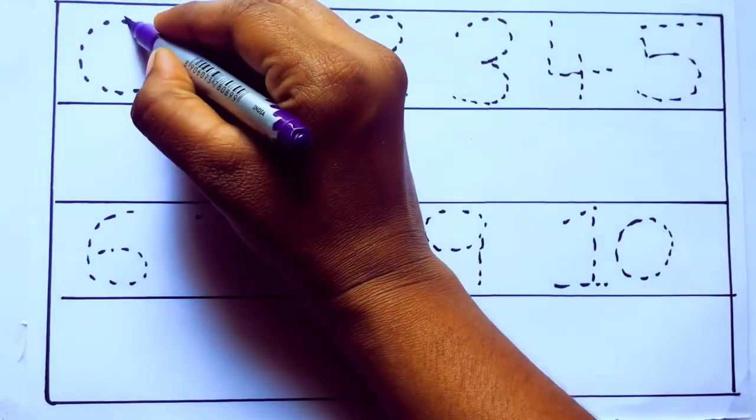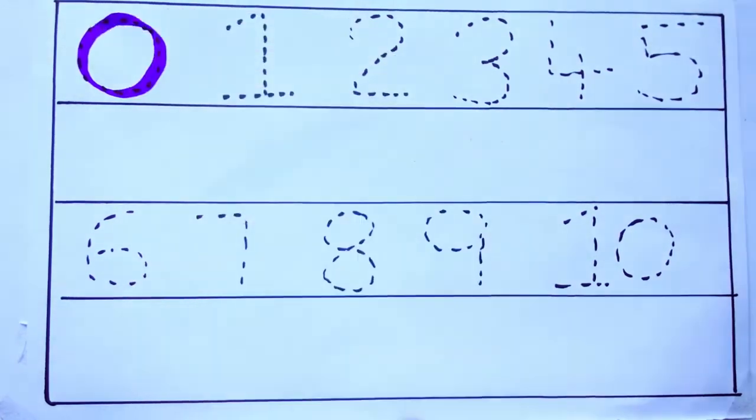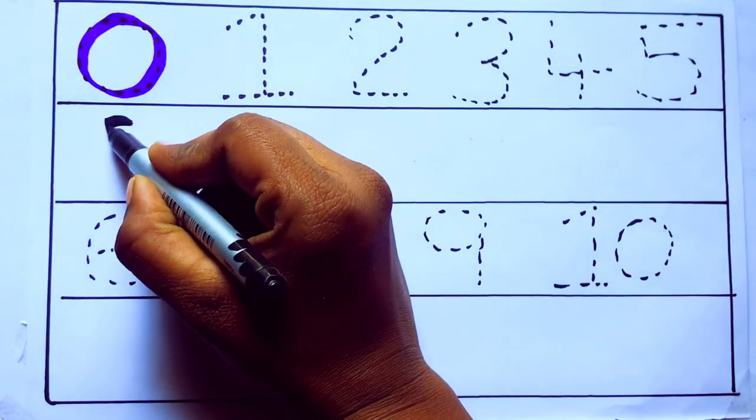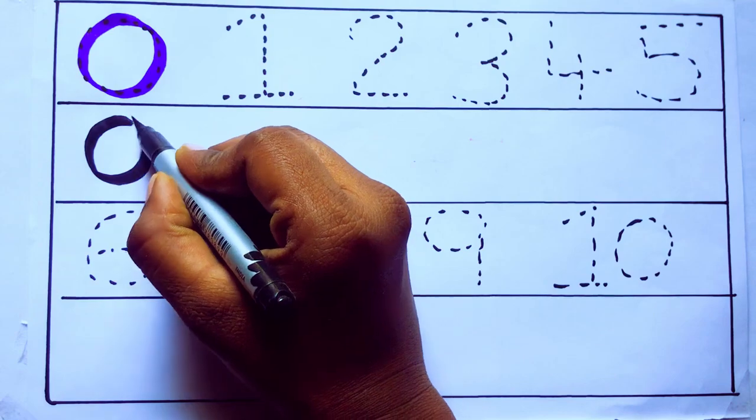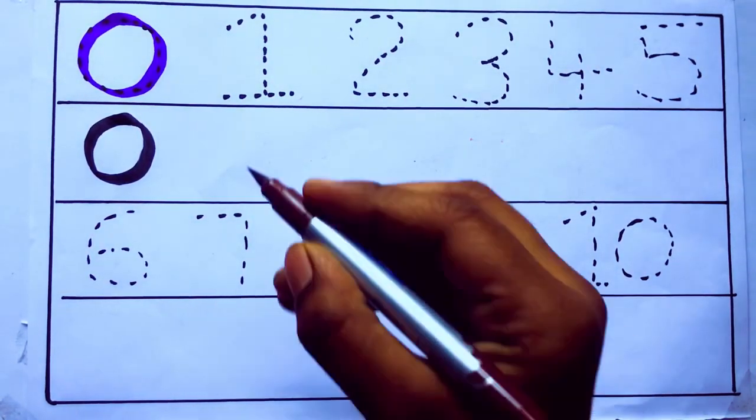Violet color 0. Z-E-R-O. Zero, brown color.